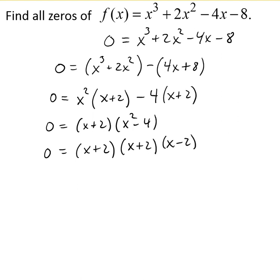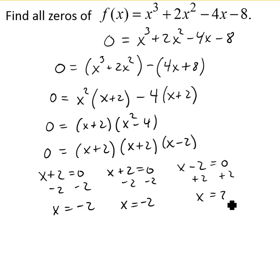To complete our solution, we take each factor and set them equal to 0. It's redundant with that second one since it's the same factor as the first. We won't have three separate solutions, just two zeros. My two solutions are x equals negative 2 and x equals 2.